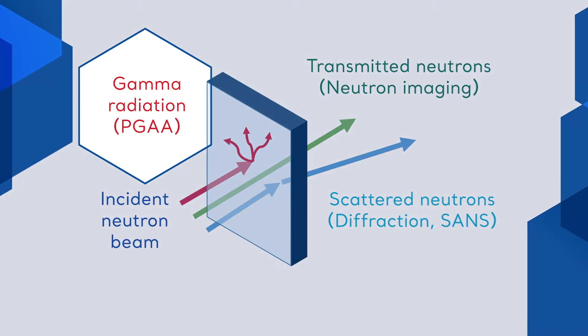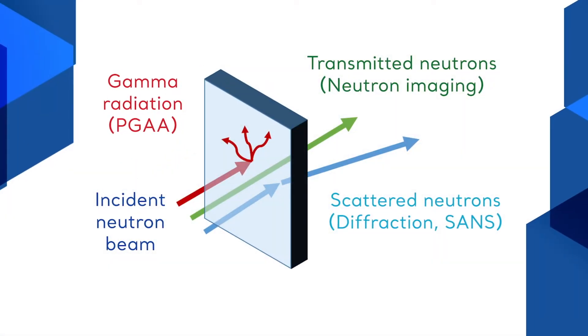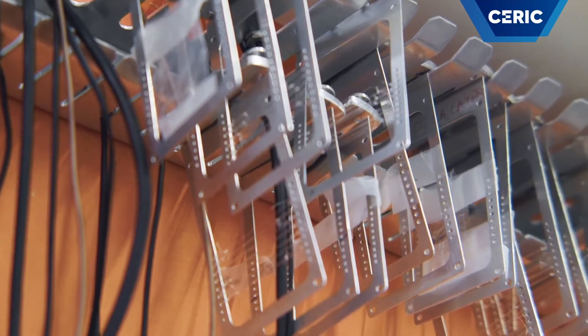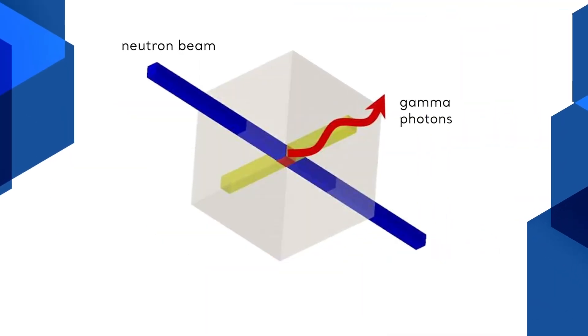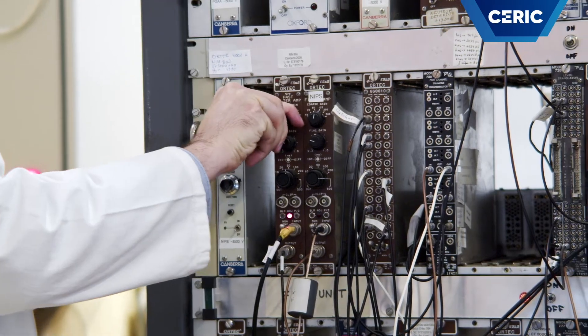PGA is a non-destructive element analysis technique where we obtain the representative bulk composition or composition of a small confined volume within the object by detecting the gamma radiation emitted during neutron irradiation.